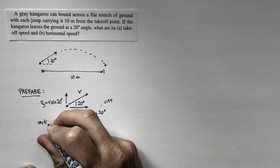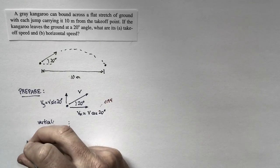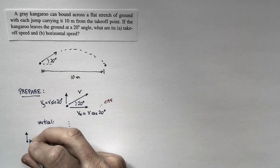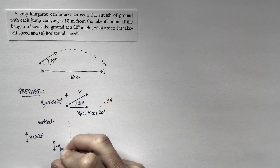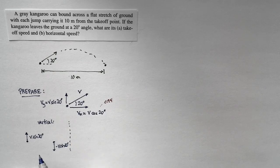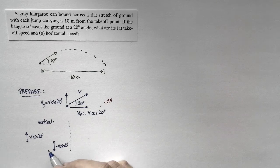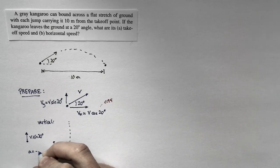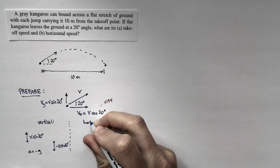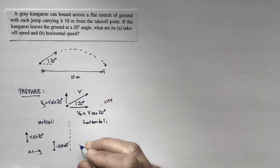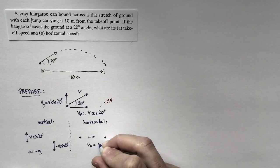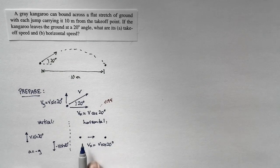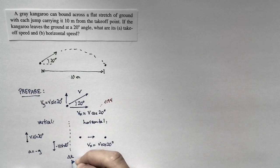For the vertical motion, it's free fall. The kangaroo starts leaving the ground moving upward at a speed of v times the sine of 20 degrees, and it finishes moving downward at negative v times the sine of 20 degrees. That's the vertical motion — it's just free fall between this point and this point, so the acceleration is equal to negative g. The horizontal motion is just uniform motion. The kangaroo moves from here to here at a constant speed of v times the cosine of 20 degrees. I have a free fall problem coupled with a uniform motion problem, and the thing that links the two is the time interval.